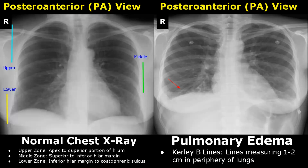There are four types of curly lines: A, B, C, and D. Curly B lines are seen well on a PA view — they measure around 1-2 cm and are found in the periphery of the lungs. Curly lines A and C are better seen on a CT scan, and curly D lines are seen in a lateral view.